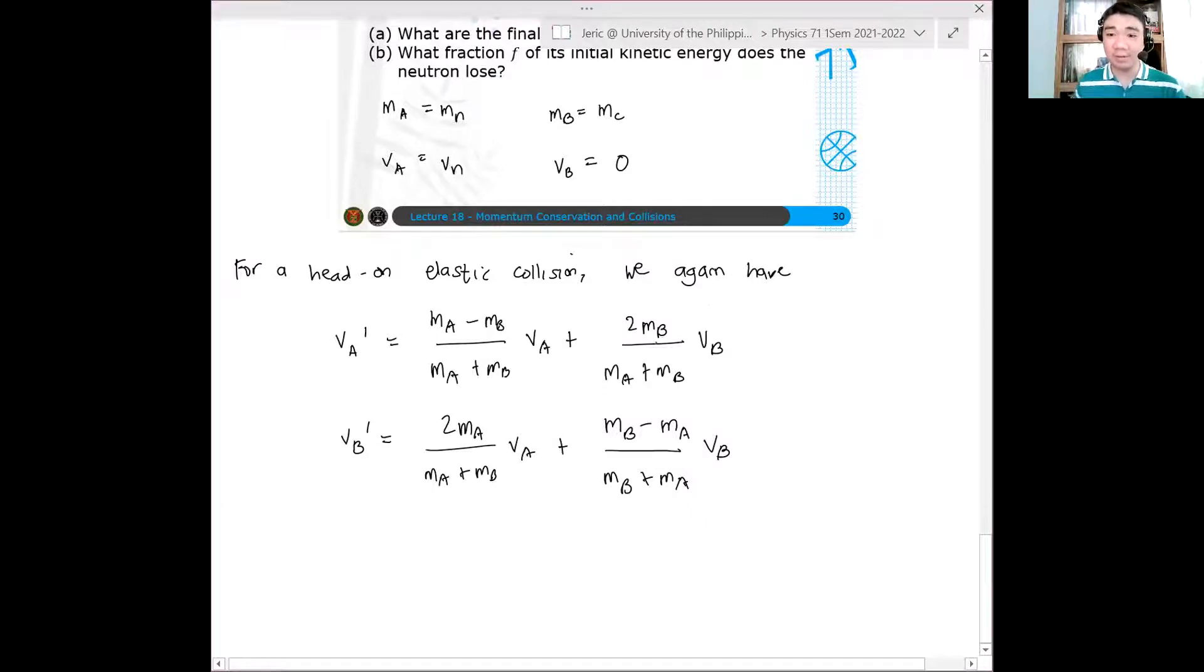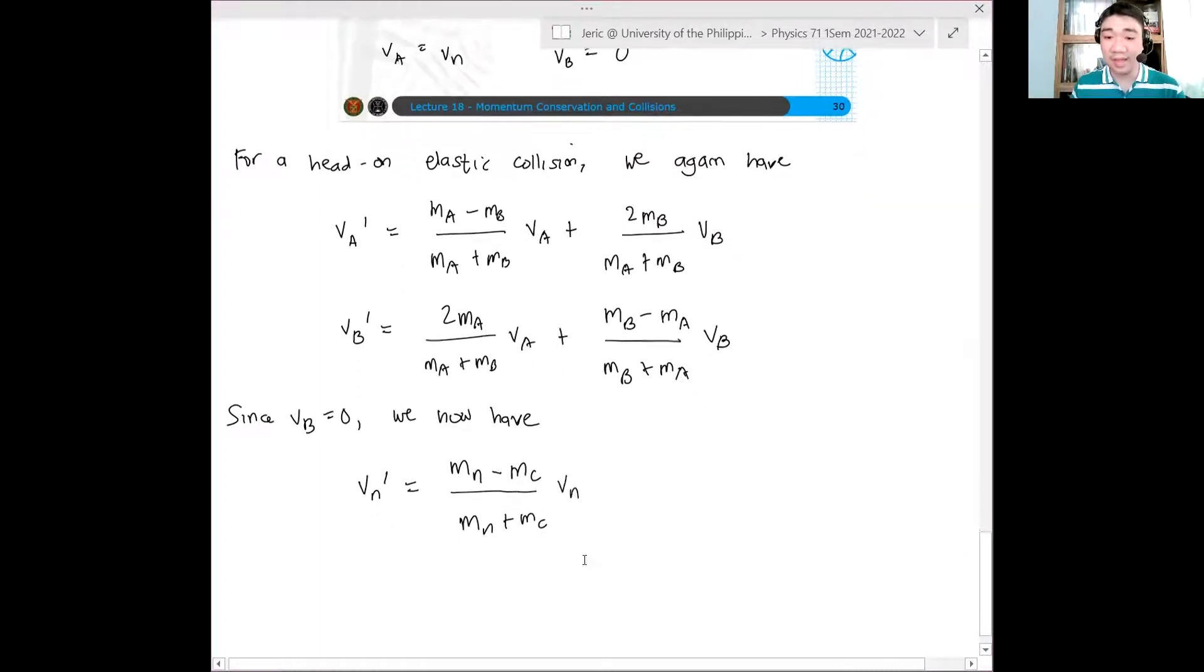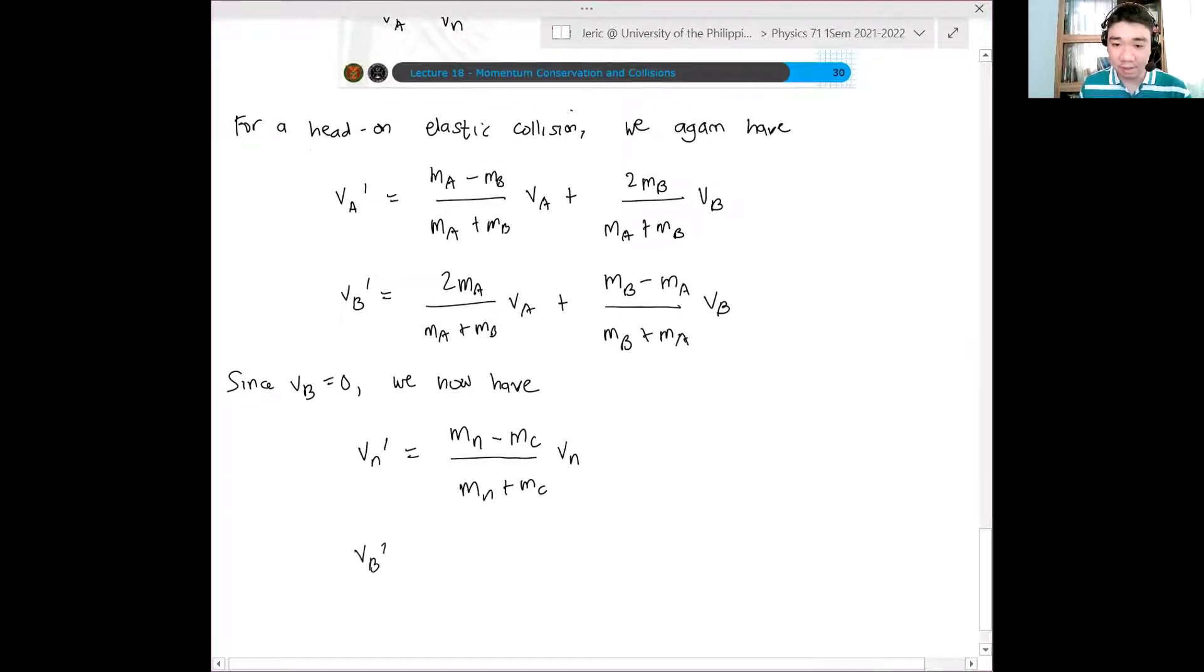Now, we know that VB equals 0. Therefore, since VB equals 0, we now have, what? We just now have the following. So we have VA prime. So, instead of writing VA, I'll just write VN prime is equal to what? I have MN minus MC all over MN plus MC times VN. And then, VB prime equals what? Twice MN all over MN plus MC multiplied by VN. And this is the answer for the final velocities. We just substitute and that's the final velocities.